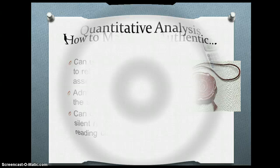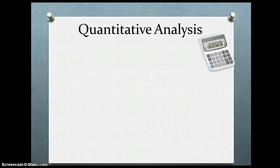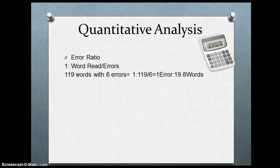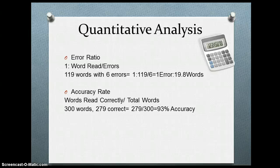Once we do the running record, we can do a quantitative analysis of the results by finding the error ratio, which is 1 in front of the words read divided by errors. So if the student read 119 words with six errors, you do 1:119 over 6, which gives you one error for every 19.8 words read. You can also calculate the accuracy rate, which is words correct over total words. So if they had 300 words and 279 were correct, we get 93% accurate, which puts them at the instructional level.